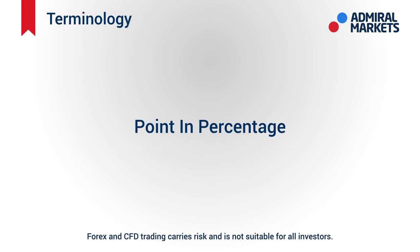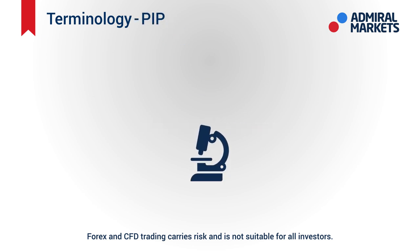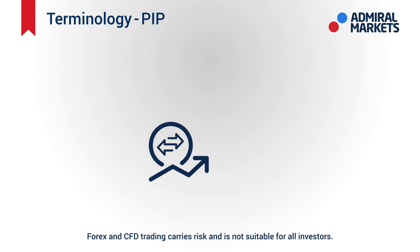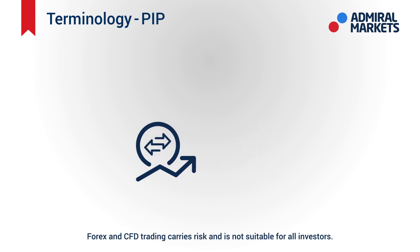Short for point in percentage, a pip is the smallest price change that can occur in the exchange rate. You will always find the exchange rate expressed in prices of up to four decimal points, so one pip is simply the change that occurs to the last decimal point.